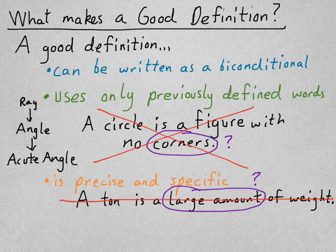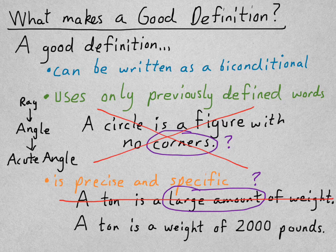It'd be better to say this. A ton is a weight of 2,000 pounds. There. Now we're being specific. We know exactly how much weight a ton is.